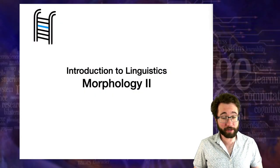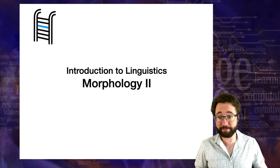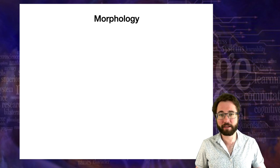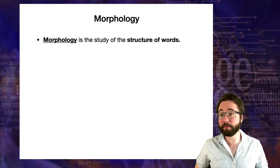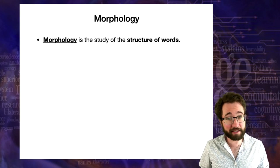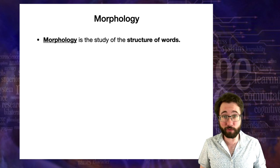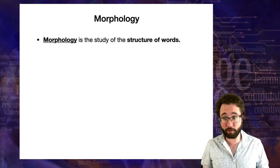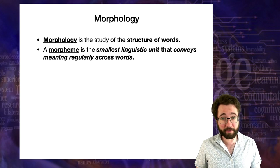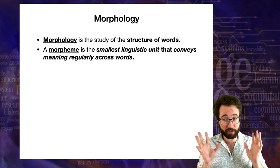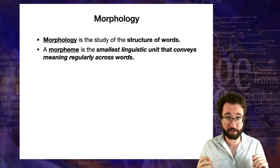Welcome back. Today we're going to go deeper into our study of morphology. We'll review the key points that we covered last time. Morphology is the study of the structure of words, and the main unit we use in morphology is the morpheme. A morpheme is the smallest linguistic unit that conveys meaning regularly across words.